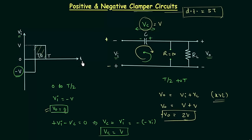Now I will plot the output waveform. For the first half cycle it is equal to 0, so we have 0 in the first half. Then the output voltage equals 2V, so we have the output waveform going up to 2V. This is how you analyze the positive clamper circuit. I am calling it positive clamper because the new DC level is more positive as compared to the previous DC level.